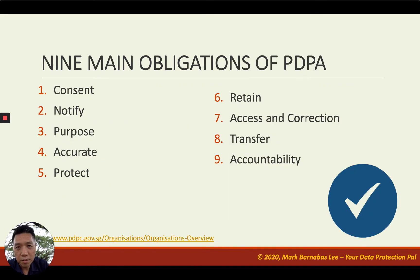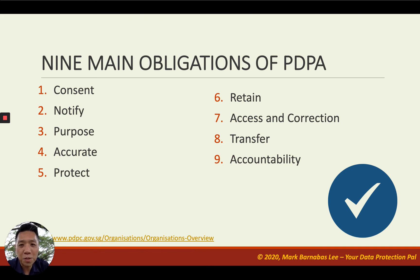The third component of PDPA is the nine obligations, which includes consent, notification, purpose, accuracy, protection, retention, access and correction, transfer, and finally accountability. There is a lot more to read up on in other courses — I'm just giving you the overview today.